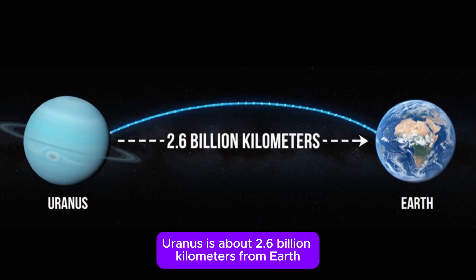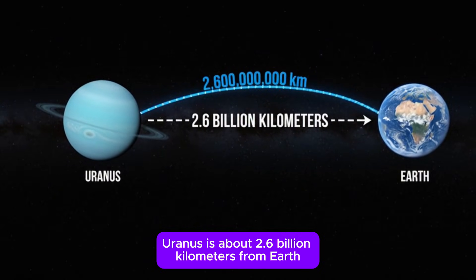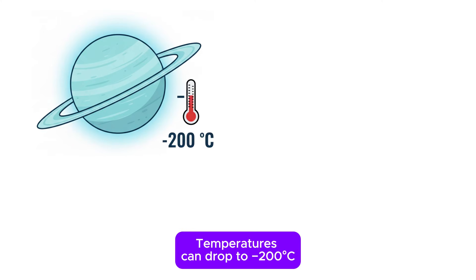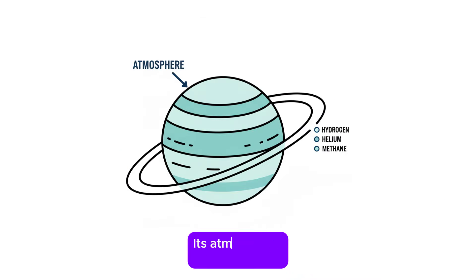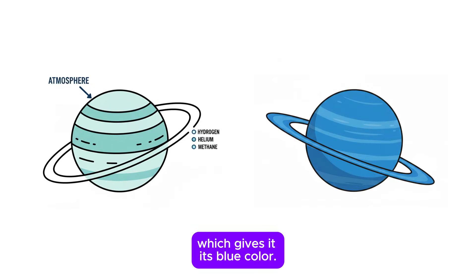Uranus. Uranus is about 2.6 billion kilometers from Earth. Temperatures can drop to negative 200 degrees Celsius, cold enough to freeze the air itself into crystals. Its atmosphere consists of hydrogen, helium, and methane, which gives it its blue color.